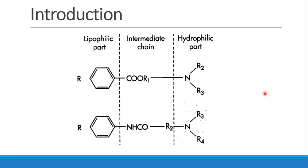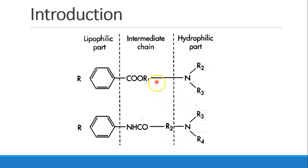The next part of our introduction looks at the local anesthetics themselves. Local anesthetics usually have a lipophilic part, a hydrophilic part, and then an intermediate chain. The intermediate chain can be an ester or an amide, and we'll talk about that more shortly.